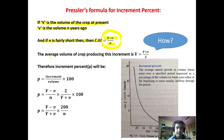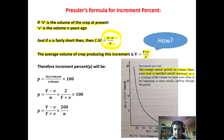The average crop that has produced this increment is equal to V plus v upon 2. We need to recall the definition of increment percent: the average annual growth in volume or basal area over a specified period, expressed as a percentage of volume or basal area, either at the beginning or more usually halfway through the period. So we take the average of both volumes: V is capital V plus small v upon 2.